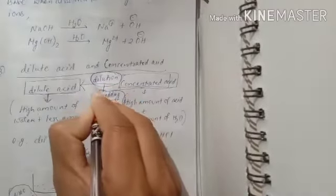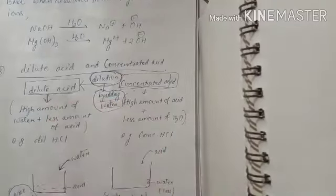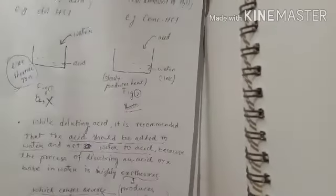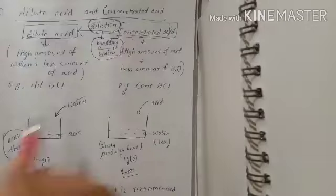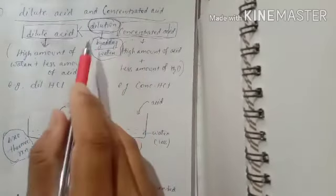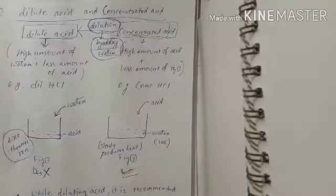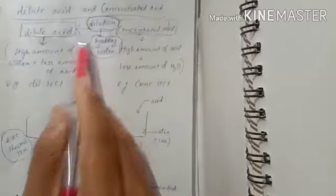The dilution process is the only way of converting concentrated acid to dilute acid. On dilution, the amount of acid does not change but the concentration decreases. That means the number or quantity of acid molecules decreases per unit volume. The concentration of H⁺ positive ions, or for a base the hydroxyl ions, will continuously decrease on dilution.